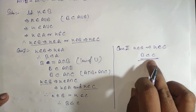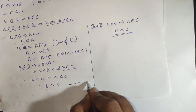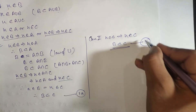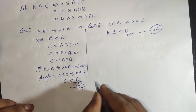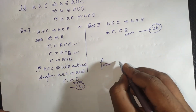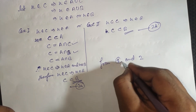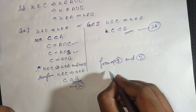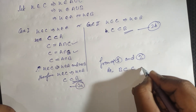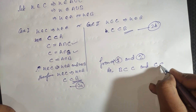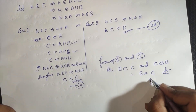Labeling results as 1 and 2: from equation 1, B is a subset of C, and from equation 2, C is a subset of B. Therefore, B is equal to C. Hence proved.